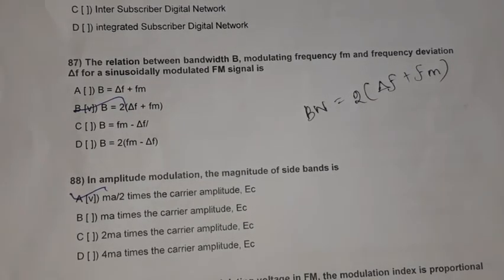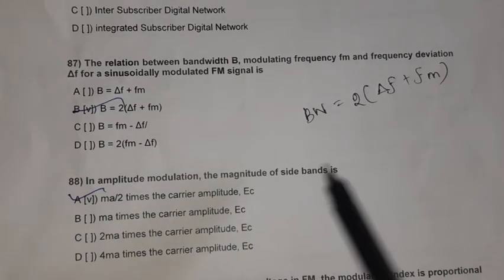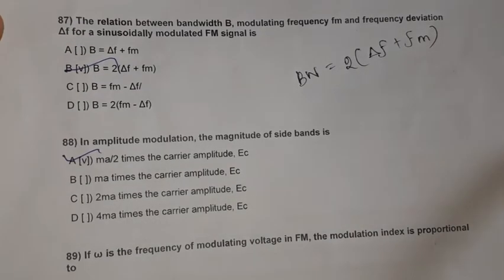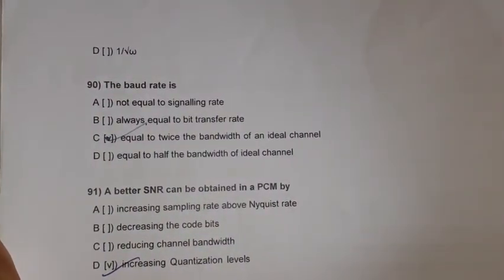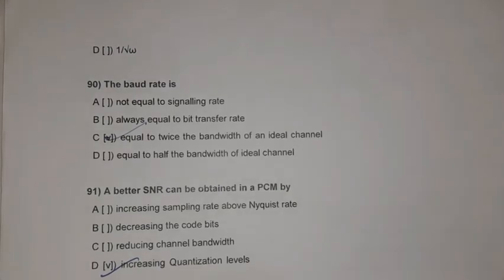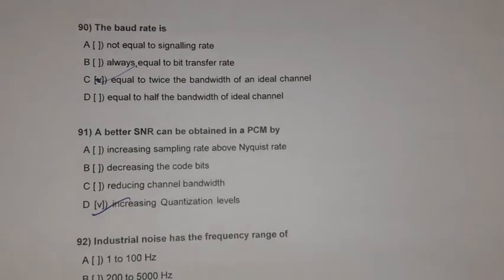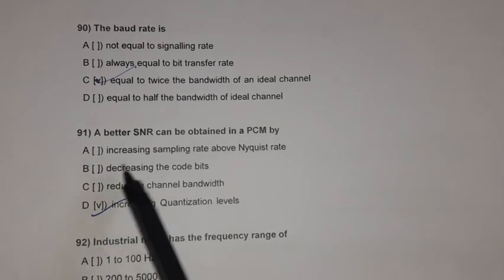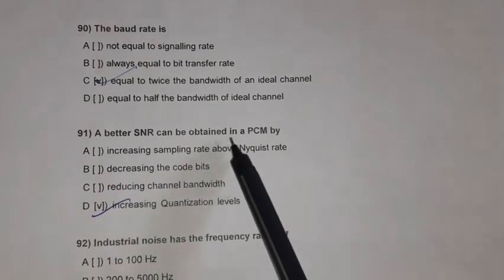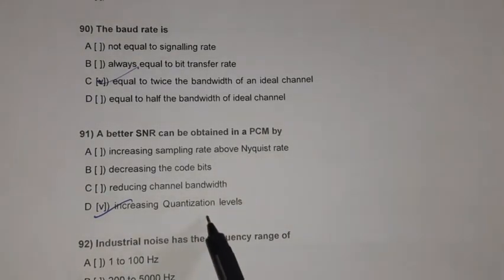Question 88: In amplitude modulation, the magnitude of the sideband is MA/2 times the carrier amplitude EC. Question 89: If omega is the modulating frequency FM, the modulation index is proportional to 1/omega. Question 90: The baud rate is equal to twice the bandwidth of an ideal channel. Question 91: A better SNR can be obtained in PCM by increasing the quantization levels.